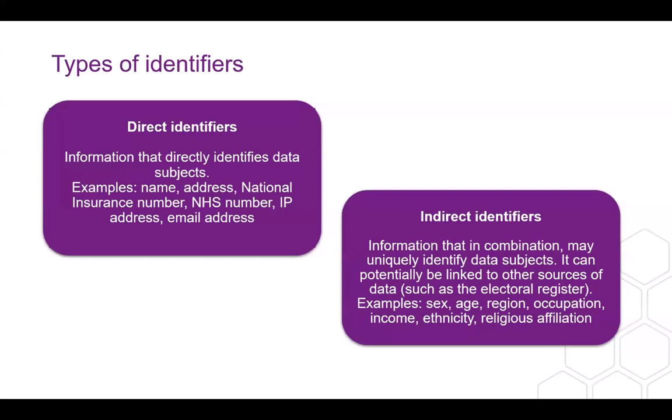These sorts of characteristics can help uniquely identify a particular individual as they tell you something about them. If you're unsure if information is considered personal data, the ICO guidance states you should treat it as if it is personal data. This is not just out of precaution, but to reiterate that information can become identifiable when combined with additional sources. You need to be wary of the possibility that somebody might combine it with other publicly available information — something as simple as Googling.